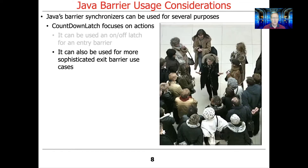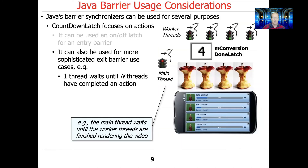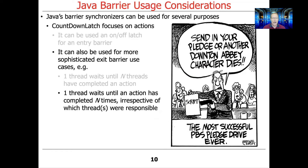You could also use a countdown latch for exit barrier use cases. One thread — for example, the main thread — after setting all the worker threads in motion, might use another countdown latch to wait until all the different worker threads have finished their processing before moving on. You can have one thread wait until an action has been completed n times.